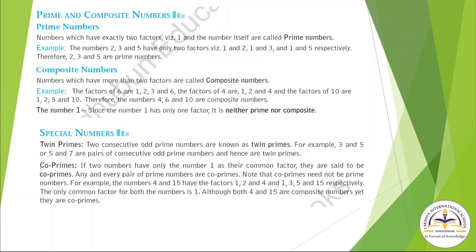Now our next concept is Prime and Composite Numbers. What are Prime Numbers? Numbers which have exactly 2 factors — 1 and the number itself — are called Prime Numbers. For example, 2, 3, 5 have only 2 factors. Taking the example of 2, its factors are 1 and 2. So these are Prime Numbers.